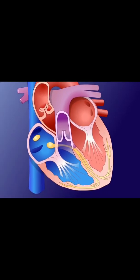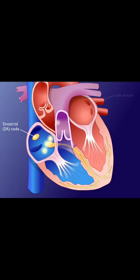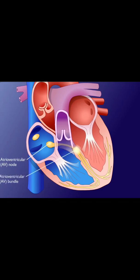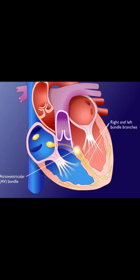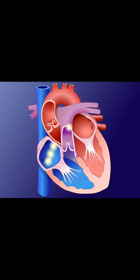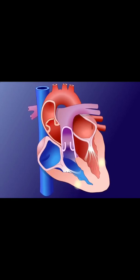Action potentials originate in the sinoatrial node and travel across the wall of the atrium to the atrioventricular node. Action potentials pass slowly through the atrioventricular node to give the atria time to contract. They then pass rapidly along the atrioventricular bundle, which extends through the fibrous skeleton into the interventricular septum. The bundle divides into right and left bundle branches, and action potentials descend to the apex of each ventricle. Action potentials are then carried by the Purkinje fibers to the ventricular walls, allowing ventricular muscle cells to contract in unison and providing a strong contraction.